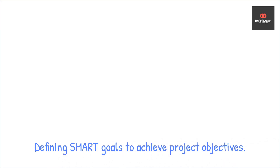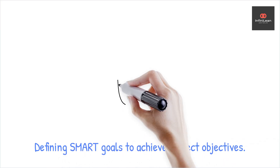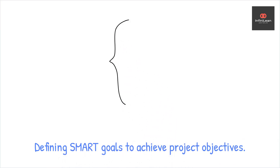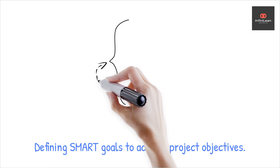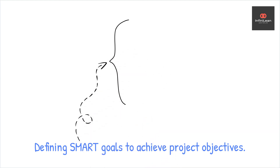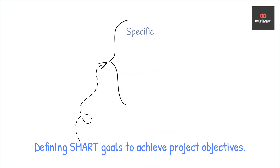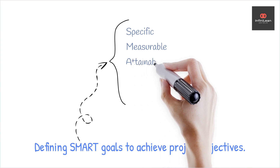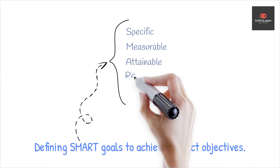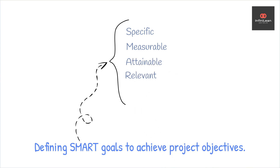Next, define the project's goals. What are you hoping to achieve? This could be anything from reducing cycle time to improving product quality. Make sure your objectives are specific, measurable, attainable, relevant, and time-bound — often called SMART goals.